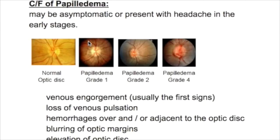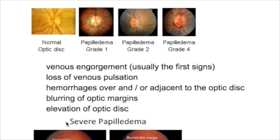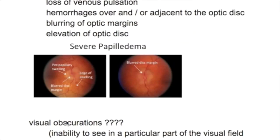What are the clinical features and examination findings of papilledema? It may be asymptomatic or present with headache in the early stages. Venous engorgement is usually the first sign, with loss of venous pulsation, hemorrhages, blurring of the optic disc margins, and elevation of the optic disc.